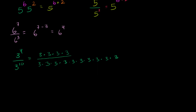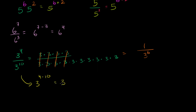If we do what we did before, the 3's cancel — those 3's cancel, those 3's cancel, those 3's cancel — and we're left with 1 over six 3's. So 1 over 3 to the 6th power. But the property I just told you would say this should also be equal to 3 to the 4 minus 10 power. What's 4 minus 10? We're going to get a negative number: 3 to the negative 6th power. So using the property you get 3 to the negative 6th, and just multiplying out you get 1 over 3 to the 6th — and these are the same quantity.